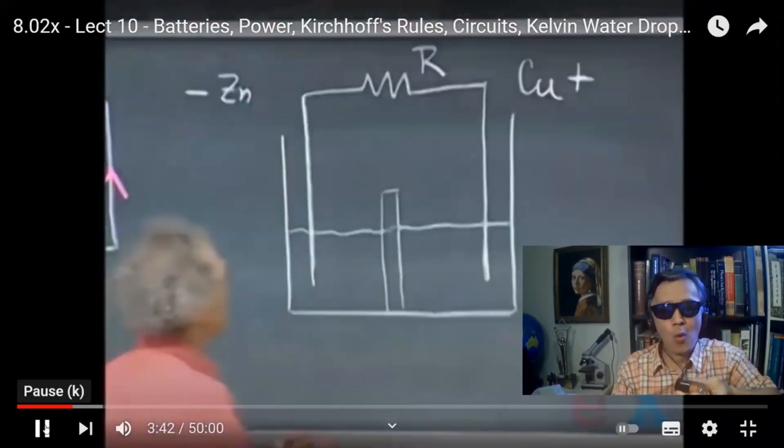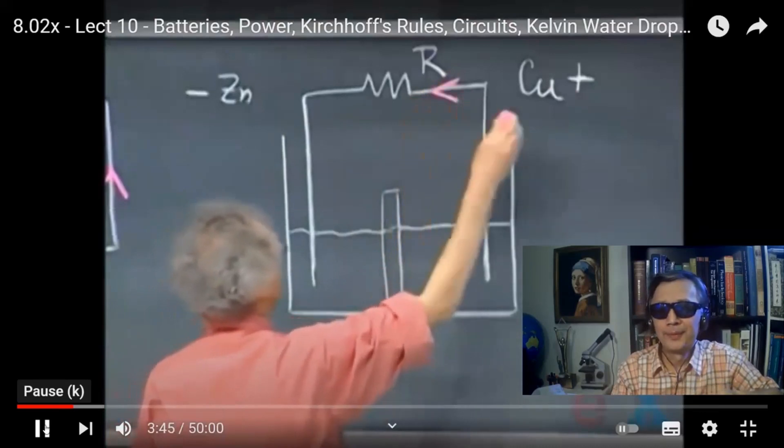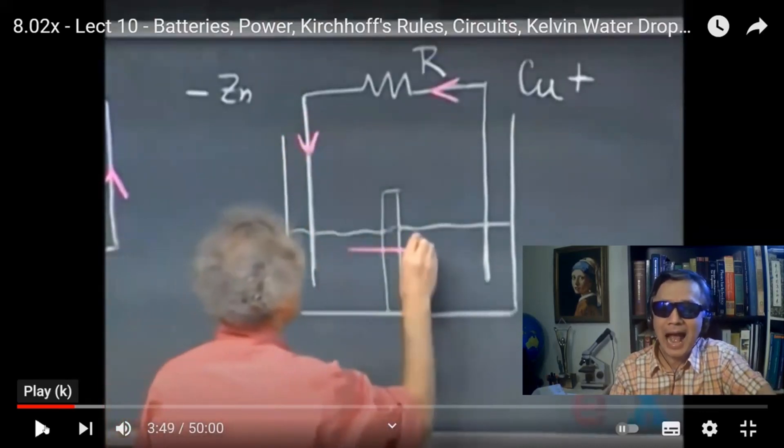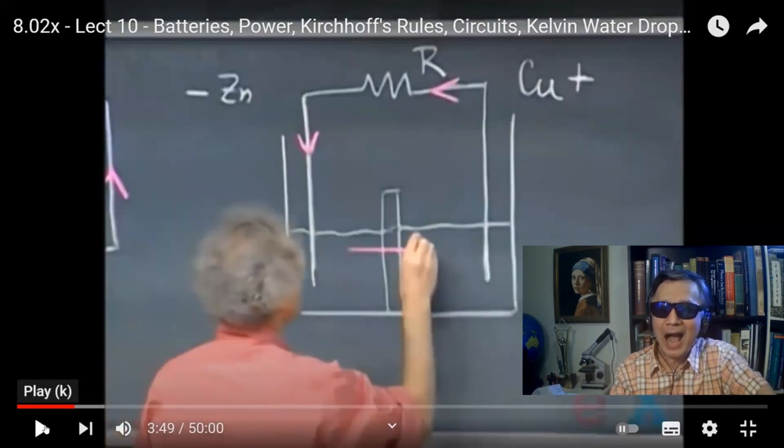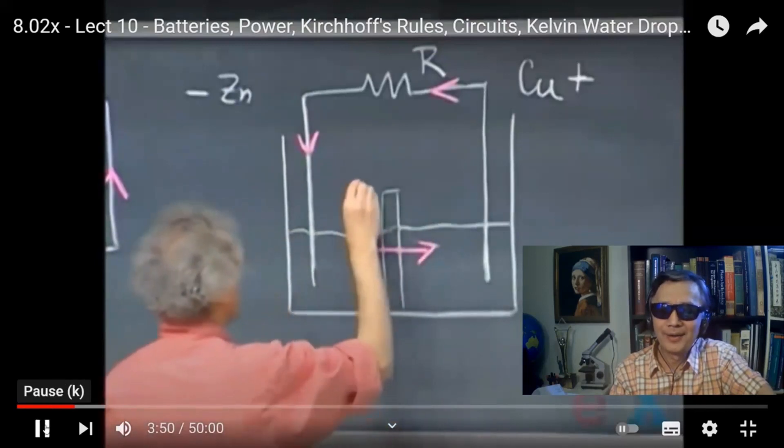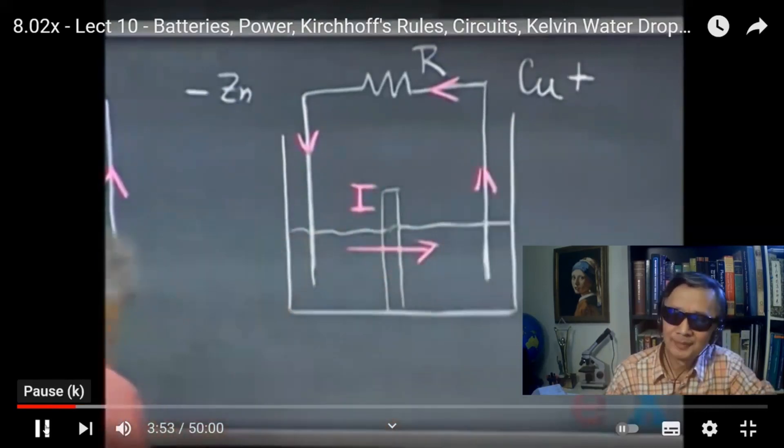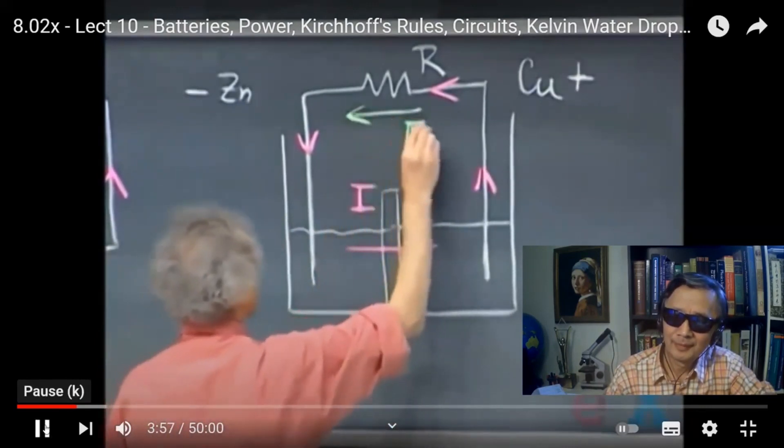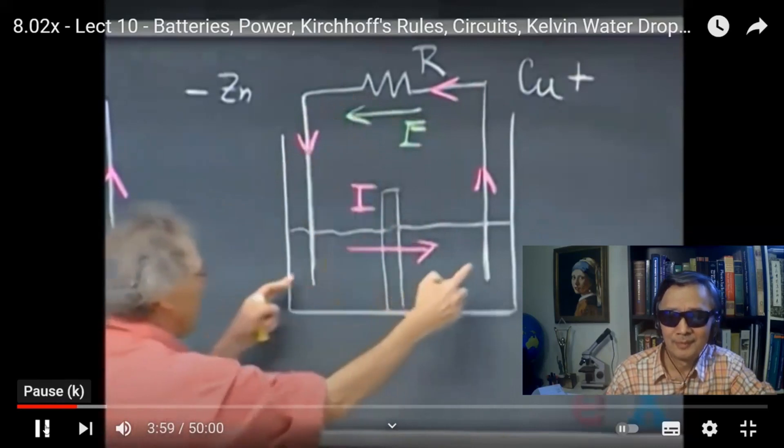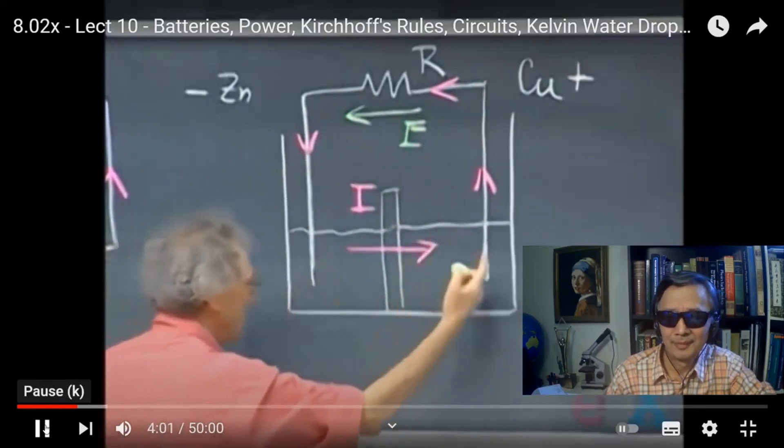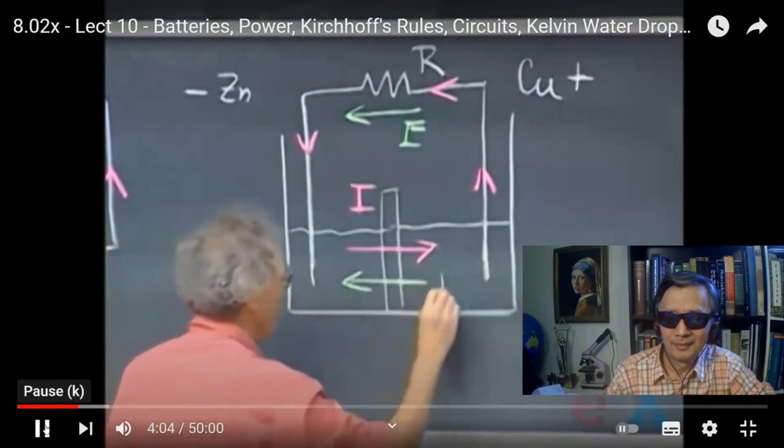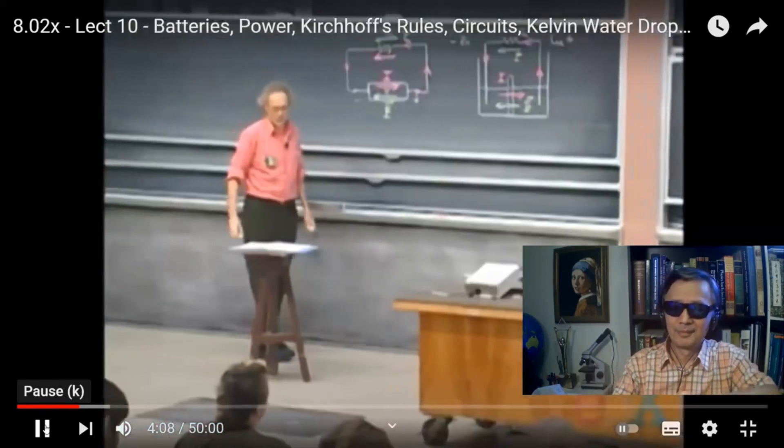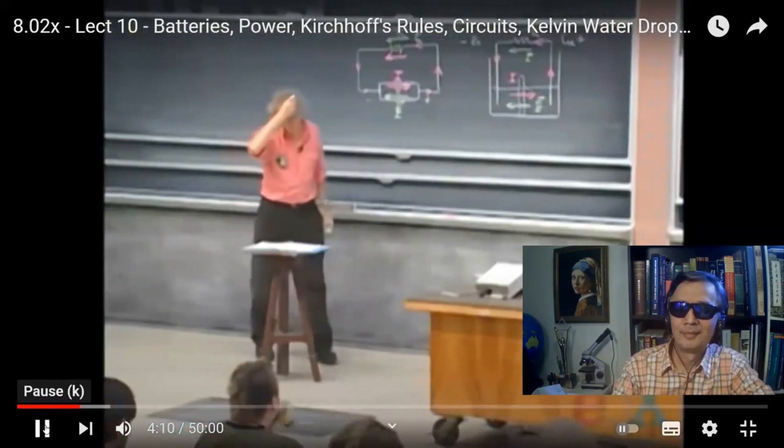A current is flowing in this direction through the resistor from the plus side of the battery to the minus side. That means inside the battery, the current is flowing. And the electric field here is in this direction from plus to minus, but also inside the battery, the electric field must be from plus to minus. So you see again, as we saw here, that the electric field is in the opposite direction of the current.